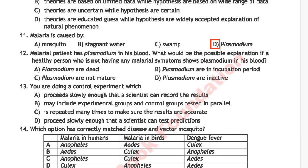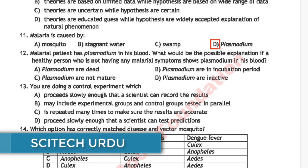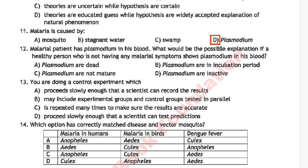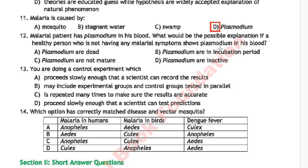MCQ number 12: a malarial patient has plasmodium in his blood. What should be the possible explanation if a healthy person who does not have malarial symptoms shows plasmodium in his blood? Option A: plasmodium are dead, option B: plasmodium are in incubation period, option C: plasmodium are not mature, option D: plasmodium are in incubation period.